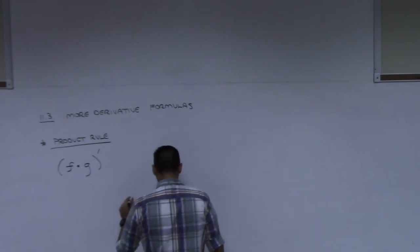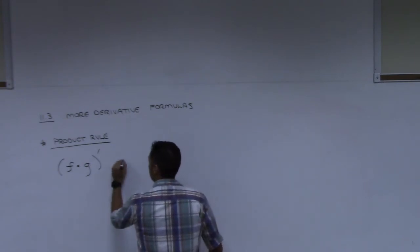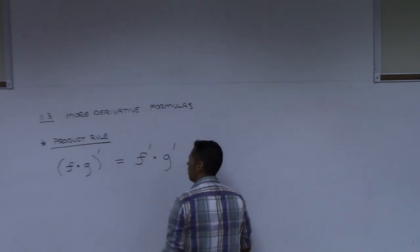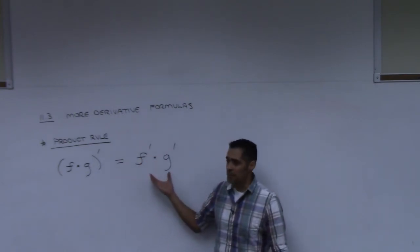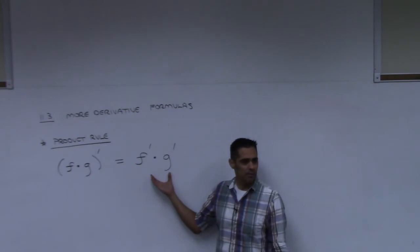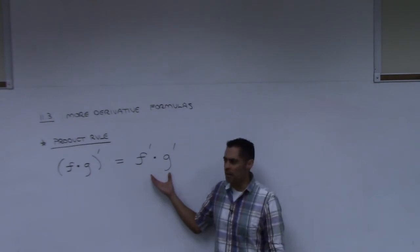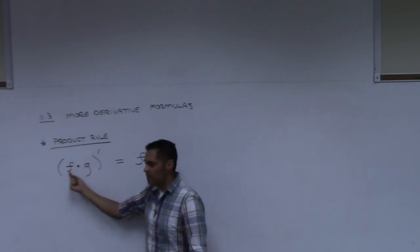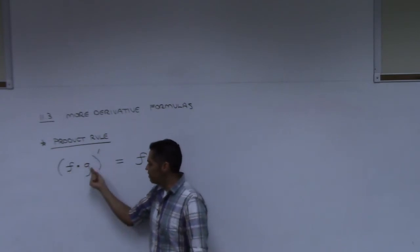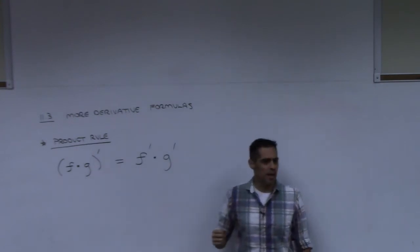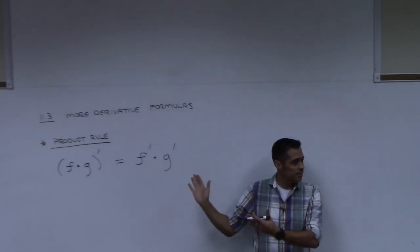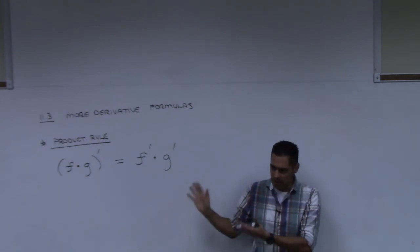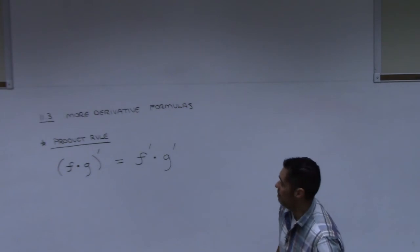Do not write this down. Do not write this down. Wouldn't it be nice if this was the formula? Because this formula would mean, okay, if two things are multiplied and you want to take the derivative, all you do is take the derivative of this one and the derivative of this one and multiply those two answers together. Wouldn't that be nice if that's what it was? But it's not. Unfortunately it is not. It's much more complicated than that.